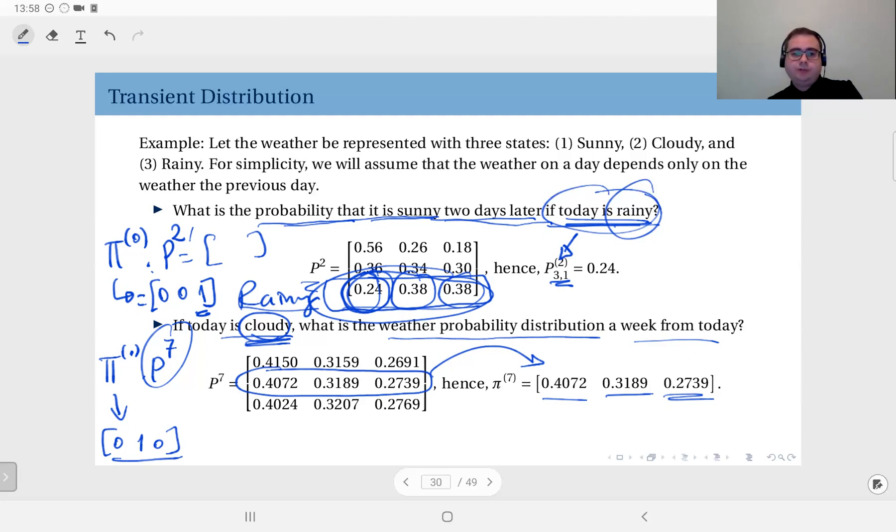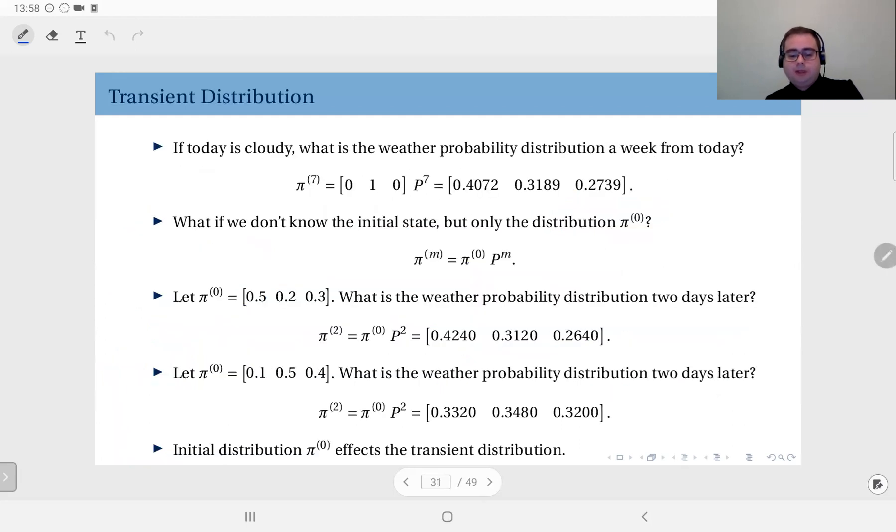So, these we call transient distributions because they depend on time. And another major point we have to make here is that, clearly, transient distributions depend on initial distributions. Since they are time dependent, that makes sense. Now, a lot of different scenarios can be investigated here. For instance, if today is cloudy, what is the weather probability distribution a week from today? This is the same question. It just emphasizes that you can also use this approach. π seven can be computed from π zero, where, since you know it's cloudy today, it's [0, 1, 0] times P to seven, because you make seven transitions.